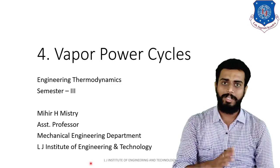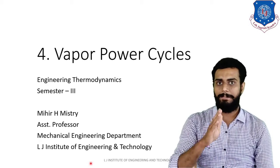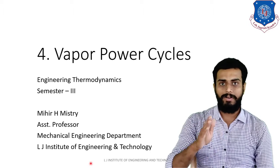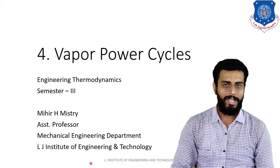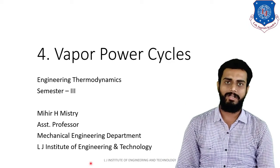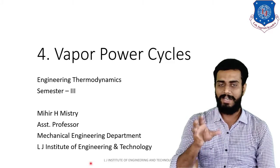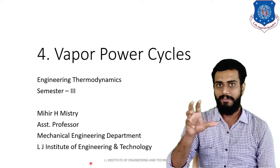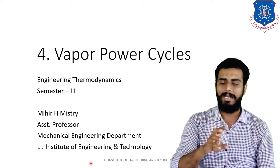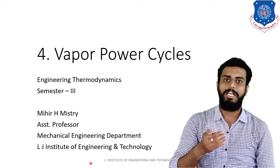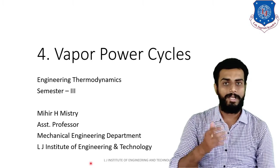Before continuing this lecture, you should watch the typical working of Rankine cycle video. The various factors that may affect the efficiency of the Rankine cycle are condenser pressure, boiler pressure, and superheating.